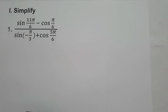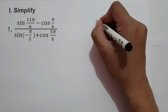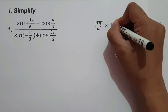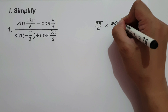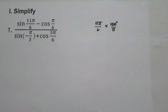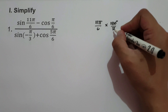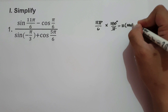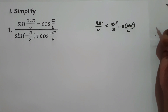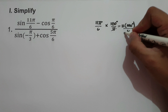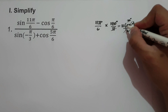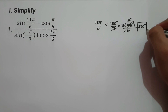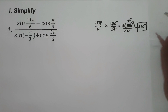To start with 11π over 6, let us convert this into degrees by multiplying 180 degrees over π. We cancel π and we are going to have 11 times 180 degrees over 6. 180 degrees divided by 6 is 30 degrees, and 30 degrees multiplied by 11 is 330 degrees. So 11π over 6 equals 330 degrees.